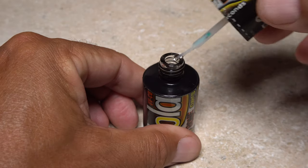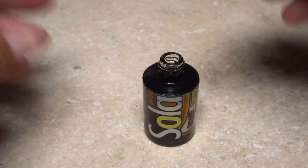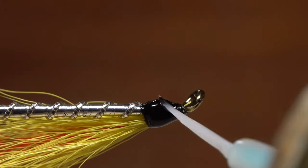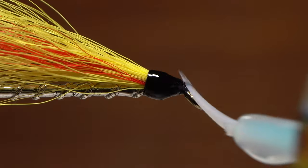Rather than head cement, I prefer UV cure resin, here Solarez Bone Dry. The stuff penetrates the thread wraps, yet at the same time builds up a nice glossy head on the fly.